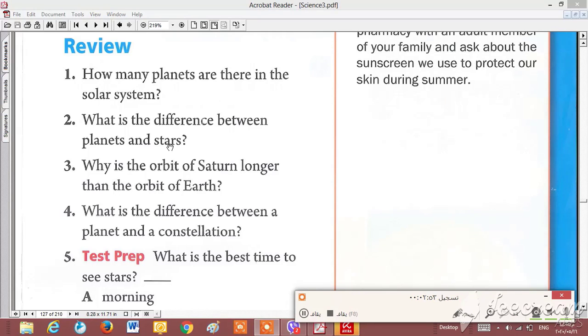Why is the orbit of Saturn longer than the orbit of Earth? We say that all planets have orbits. Saturn's orbit is longer than Earth's because Saturn is so far from the sun, so it needs an orbit longer than the others.